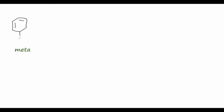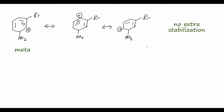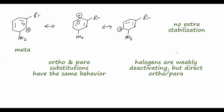For the meta substitution intermediate with bromine on this carbon, we draw resonance structures moving the double bonds and find that no configuration places the positive charge on the same carbon as the bromine. So we won't get that extra stabilization from the bromine for meta attack. I'll leave the para resonance structures for you to draw — it behaves the same way as the ortho. So although halogens are mildly deactivating to EAS reactions, meaning bromobenzene reacts slower than unsubstituted benzene, they are indeed ortho-para directors due to their ability to donate lone pairs to the ring.